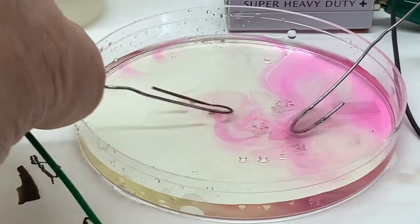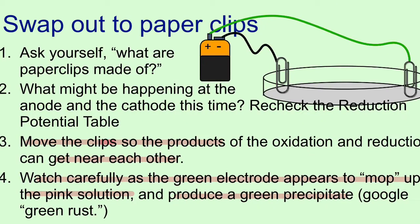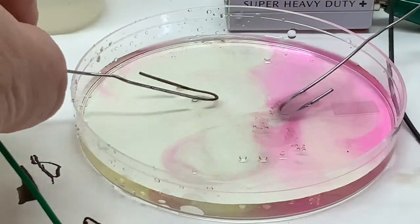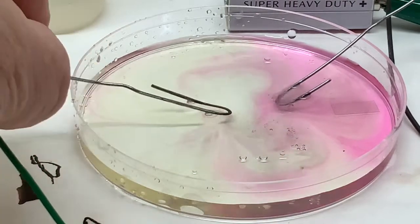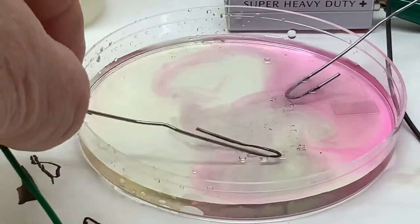This time the paper clips are moved around so that the products of the oxidation and reduction can get near each other. Did you notice that the green electrode paper clip appears to mop up the pink caused by the phenolphthalein?